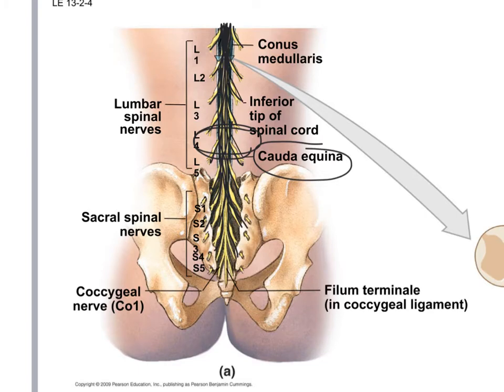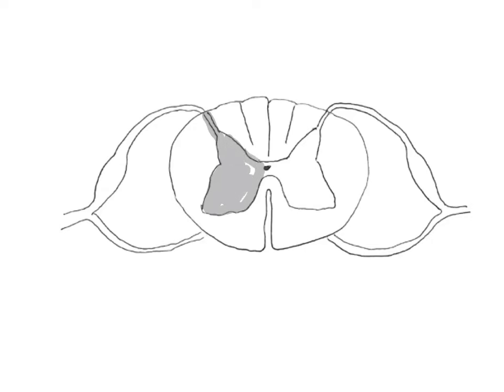Now let's look at a cross section of the spinal cord - we've cut it in half to see what's inside. All levels look very similar; it's just that the gray matter and white matter may be bigger or smaller depending on the area. Looking at this section, the inside area looks kind of like a butterfly and we call that the gray matter. Gray matter is composed of neural tissue that is not myelinated - it's gray because of all the cell bodies that are in there.